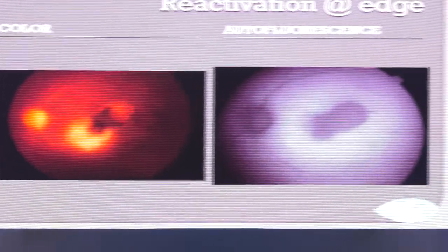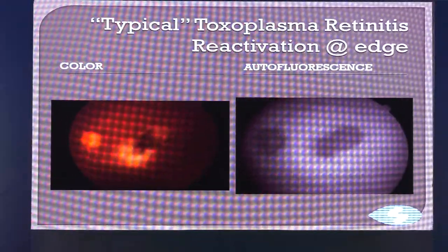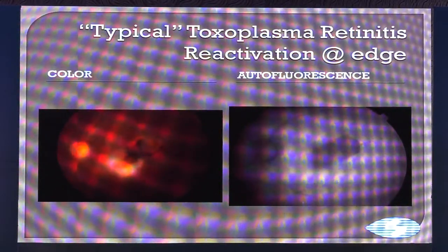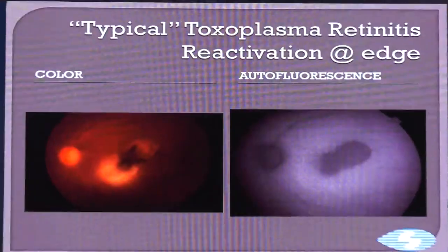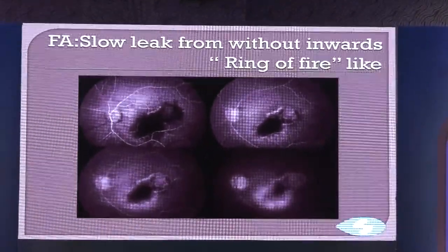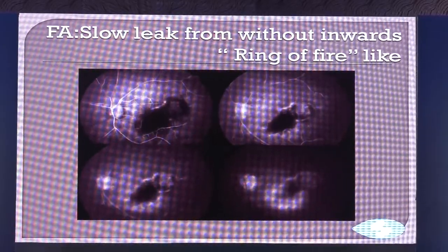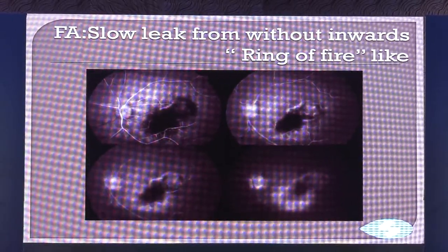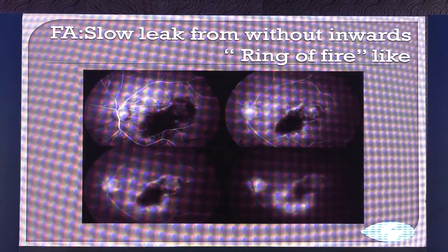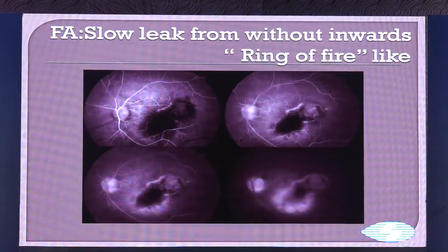We all know toxoplasmosis and the typical way it presents, but there are certain things worth sharing. Here is a very typical case of reactivation of toxoplasmosis at the edge of a pigmented scar. It is showing hypofluorescence because the entire lesion is inflamed. The angiogram shows features of a scar, chorioretinitis, and retinitis — sometimes helpful when you have an atypical case. You see slowly increasing leakage from the periphery of the active lesion, with gradual staining of the area of the previous pigmented scar.